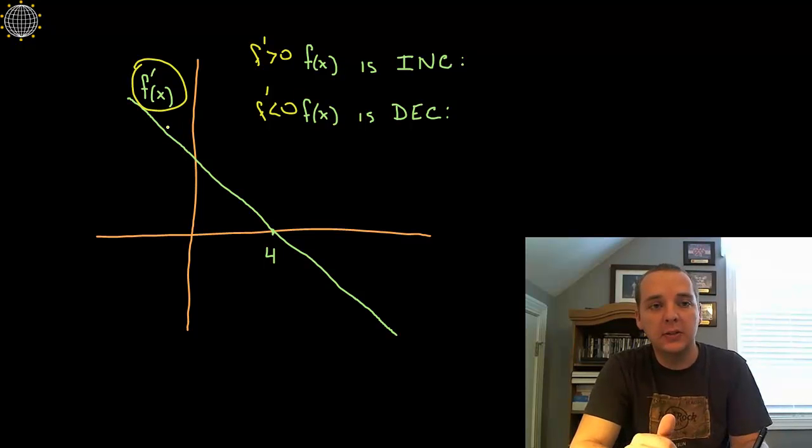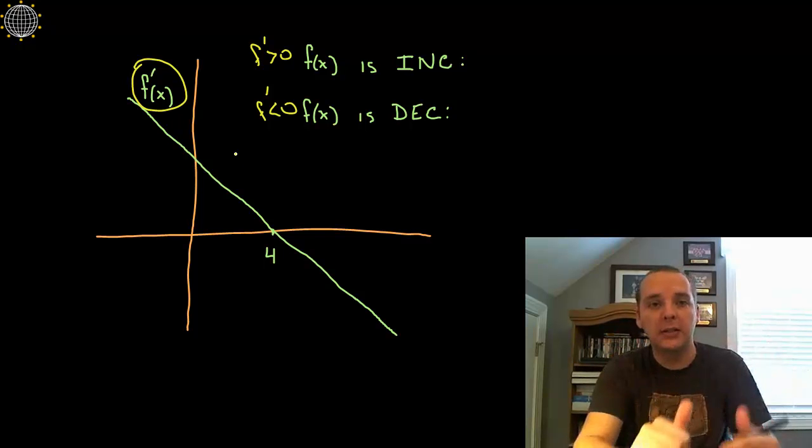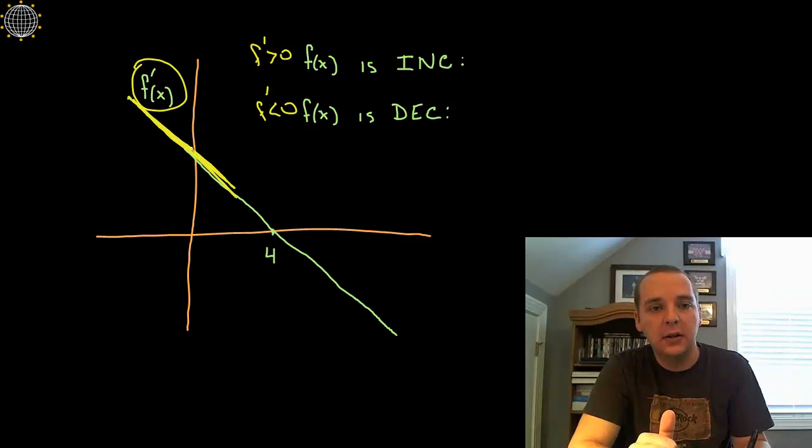So all we have to do is look at this guy's graph and see where is this graph positive and negative, simply above the x-axis or below the x-axis. So this graph is above the x-axis right about here.